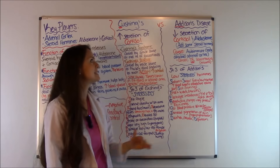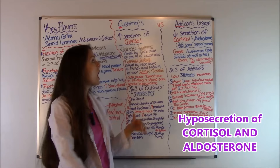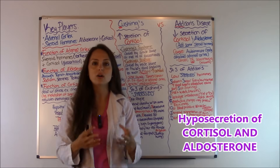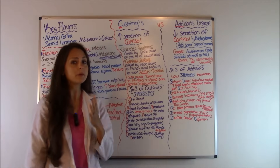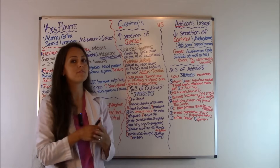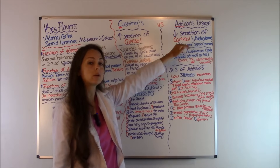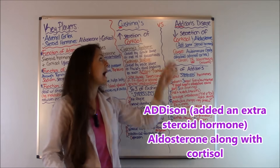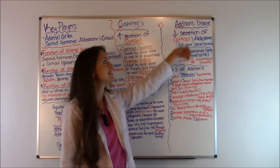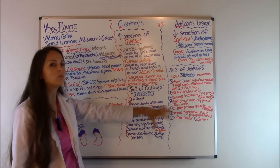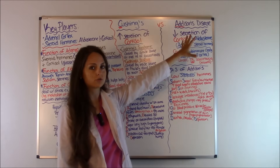Now let's flip over to Addison's disease. This is where you have hyposecretion — low levels — of both cortisol and aldosterone. A mnemonic: in Addison's you have the letters A-D-D at the start, and you're dealing with two steroid hormones. So you had to add one — Addison's, add some — and that added hormone is aldosterone, which also starts with A. So both disorders deal with cortisol, but Addison's also involves aldosterone.